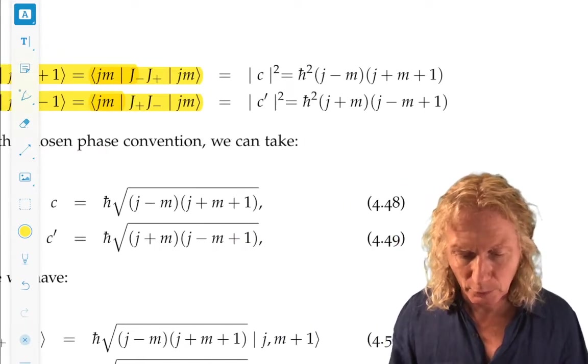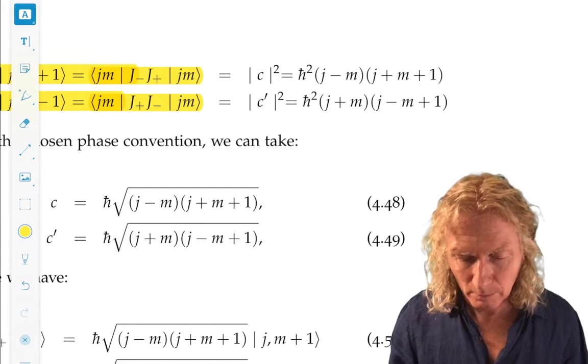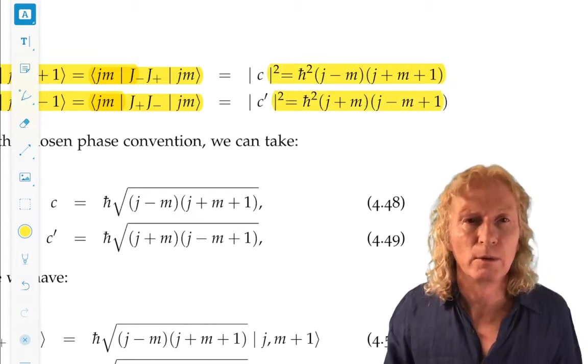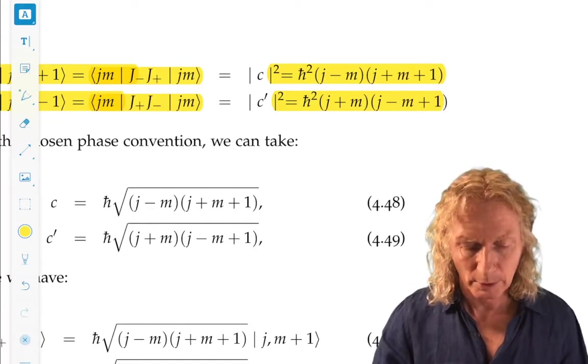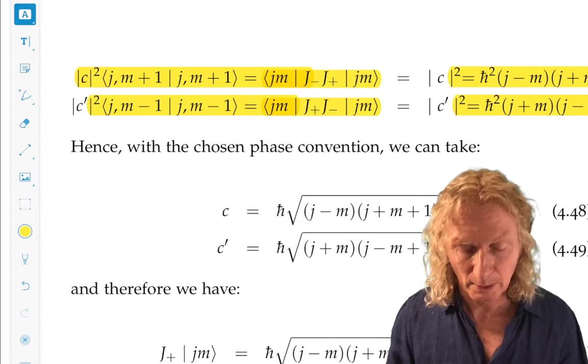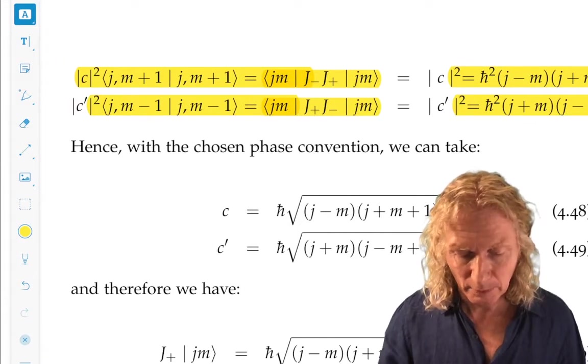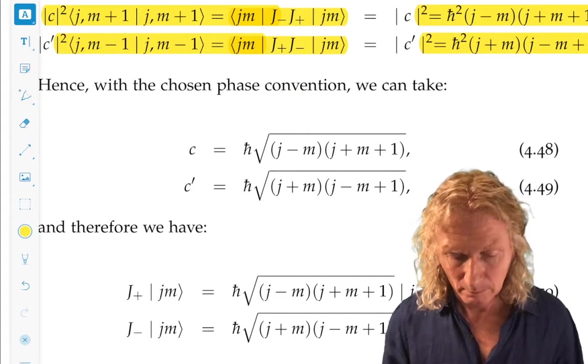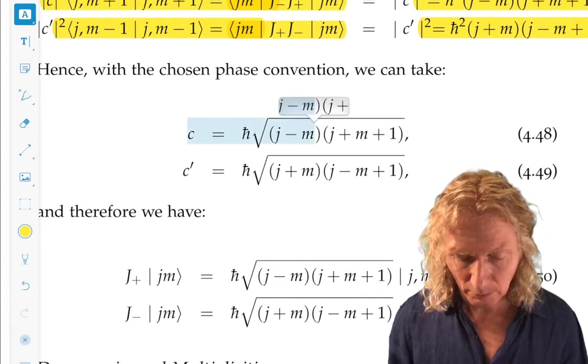And we set this equal to C squared, and that's equal to the value of what we achieve for these bounds. So this gives us a possible value for choice of C, and this is what we're going to take.